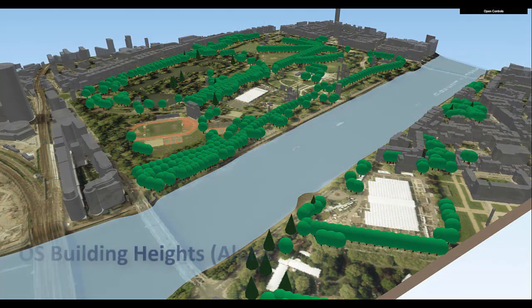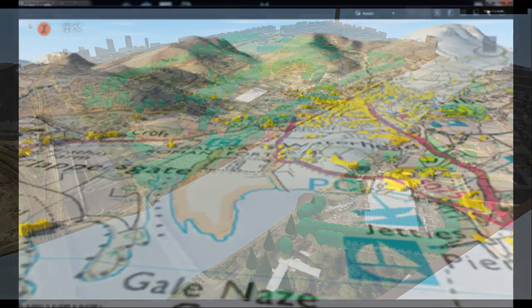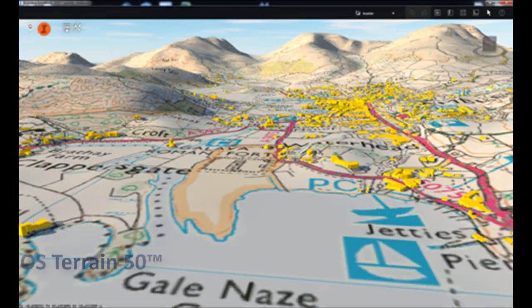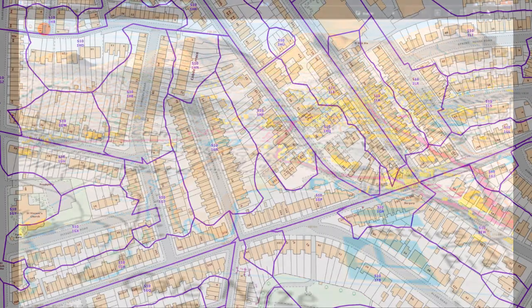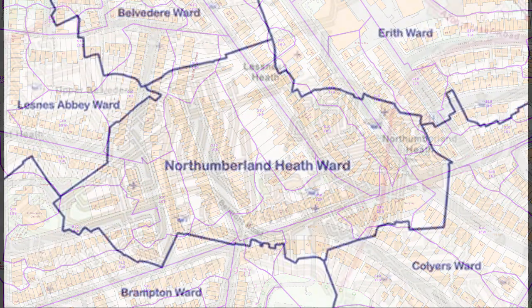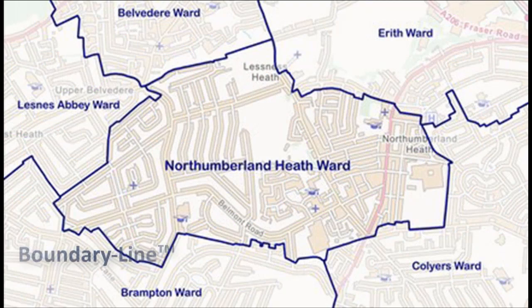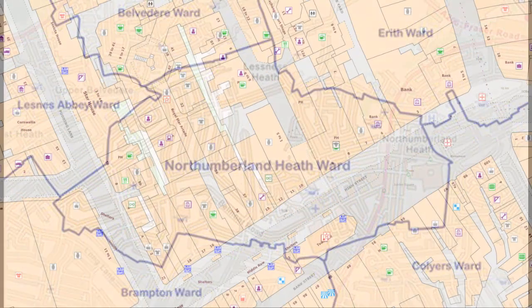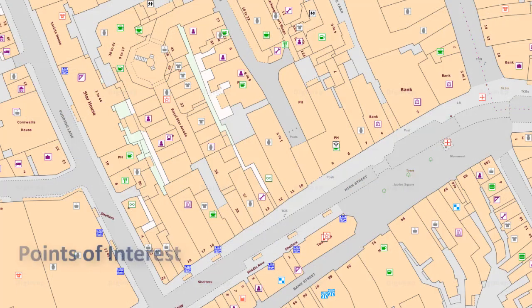Users can access building height data and digital terrain models for 3D modelling. Postcode data, administrative and electoral boundaries, and points of interest data are also available.